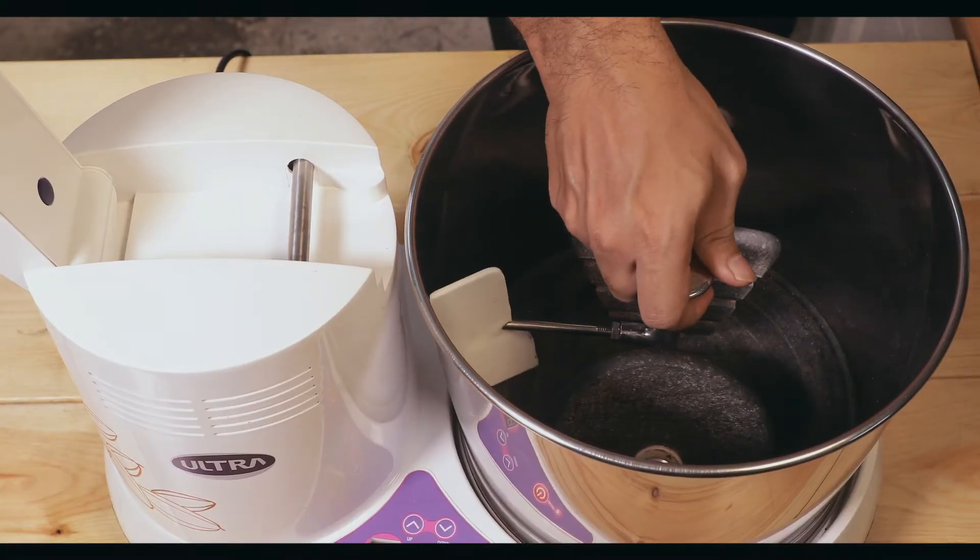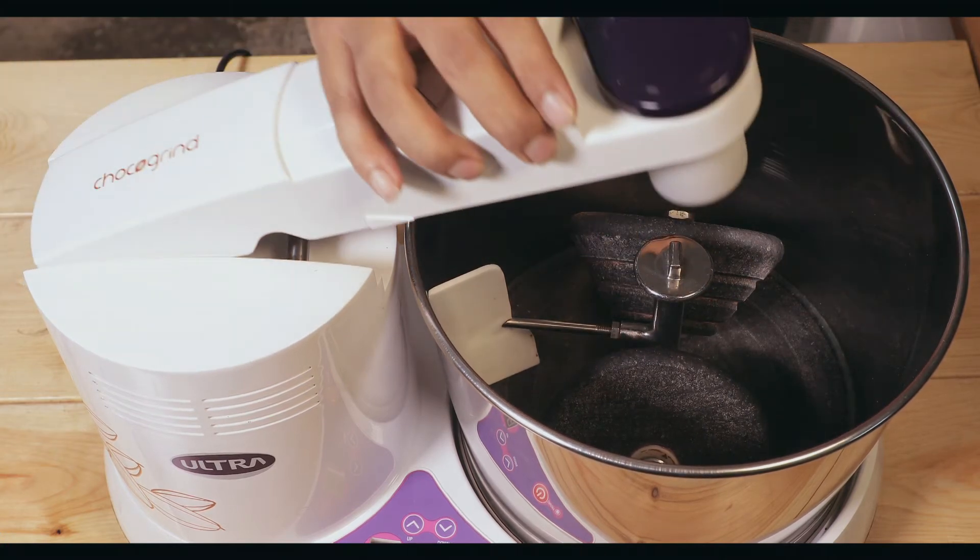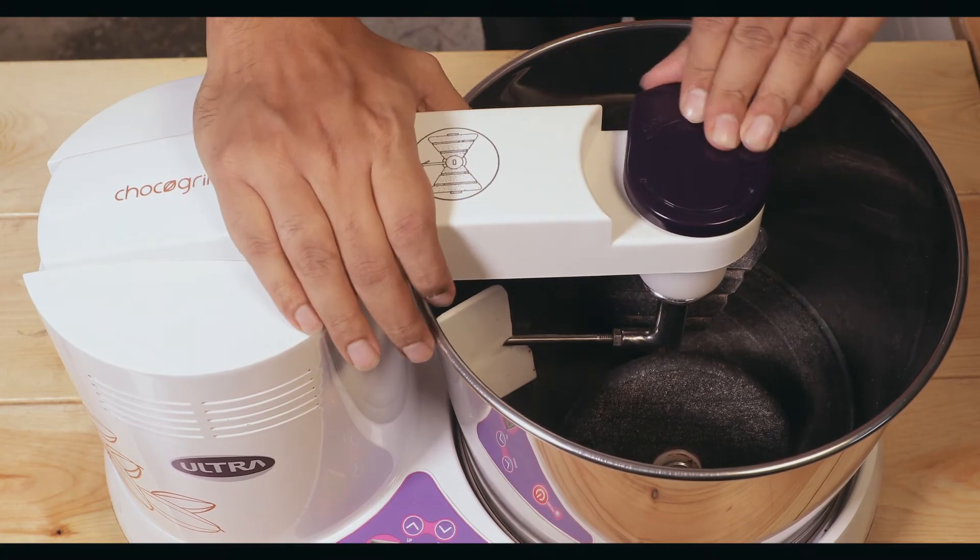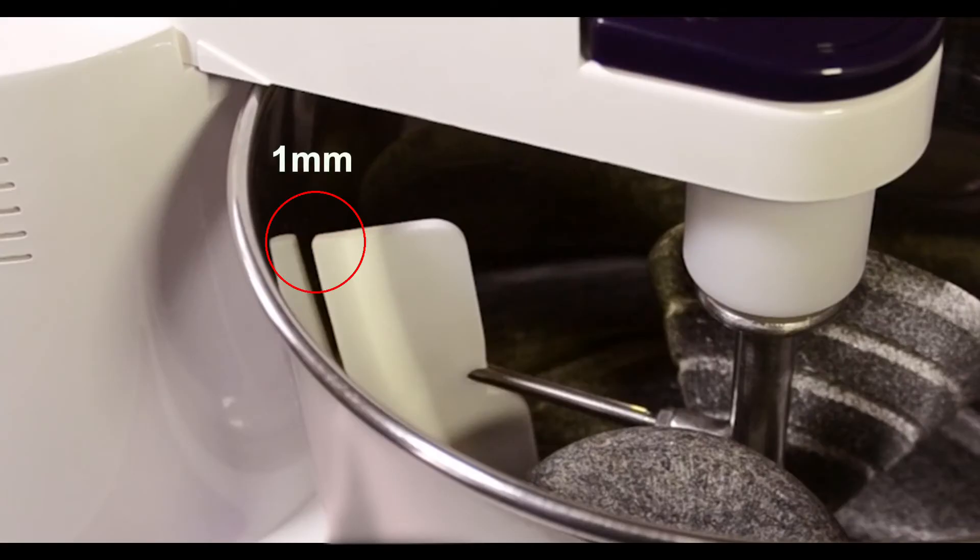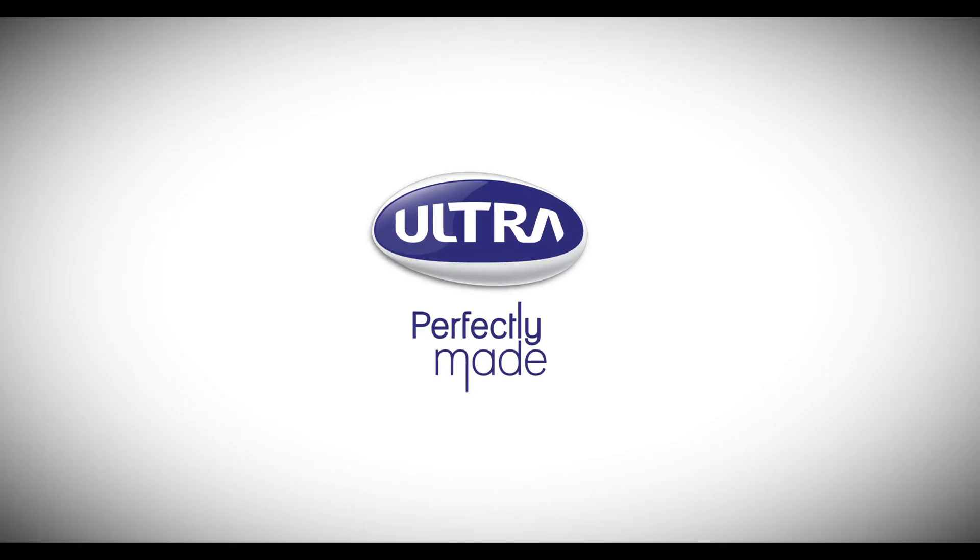Place the roller stone assembly back in the drum and lock it in position. Make sure that the gap between the wiper and the drum is at least one millimeter.